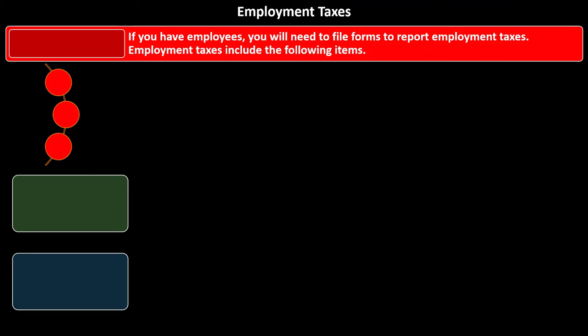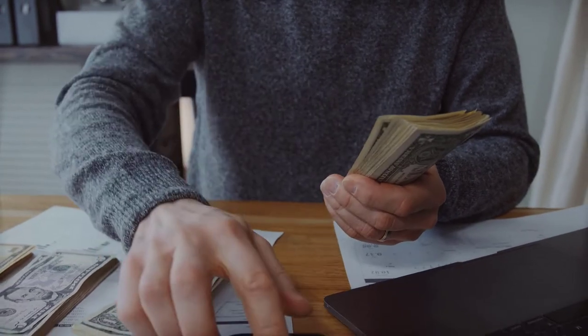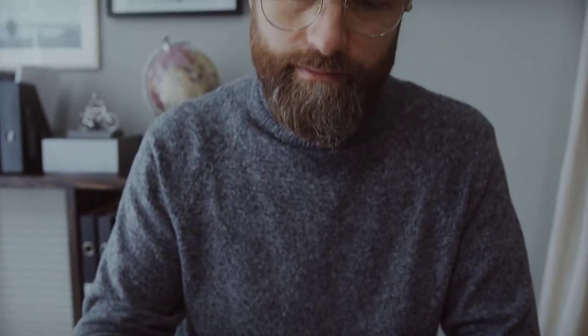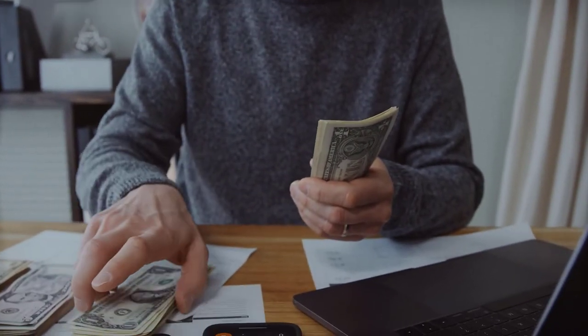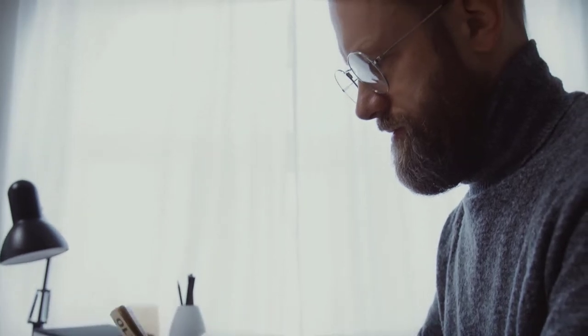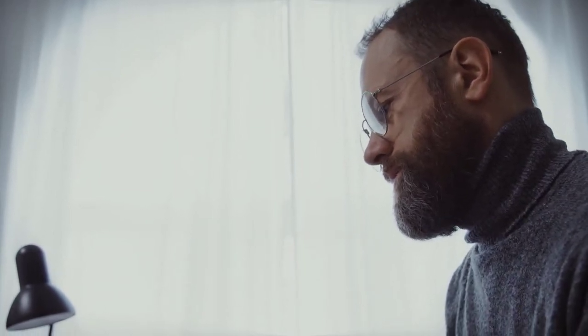You'll still have to deal with Social Security and Medicare, but when we're talking about Social Security and Medicare here, we're not talking about the Social Security and Medicare charged to you as self-employment tax. This is Social Security and Medicare charged to the employee. Half of it is taken from them — paid by them. You are required to be the tax collector, withholding their portion: 6.2% for Social Security and 1.45% for Medicare. You withhold that and pay it to the government on their behalf.